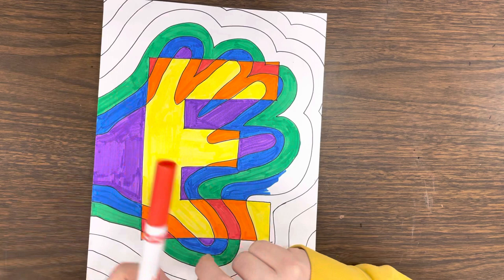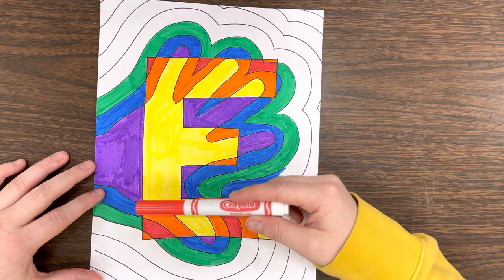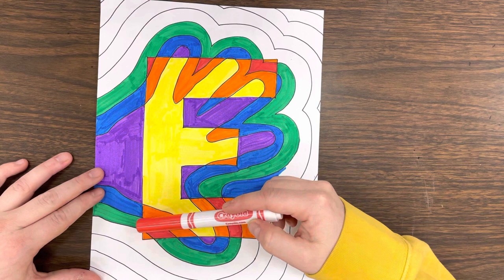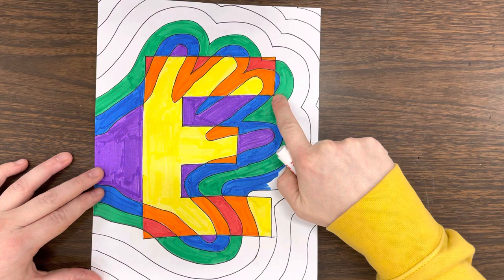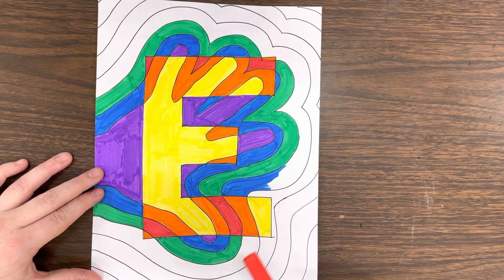After orange comes red. With this, I am touching everything that is orange and still staying inside of my letter E. So here I only have a little piece of red, and I have a little bitty piece of red in this corner. And then a little bit of red here, here, and here.